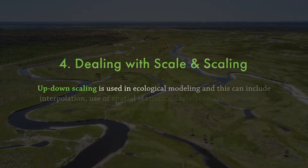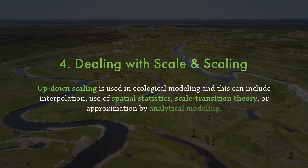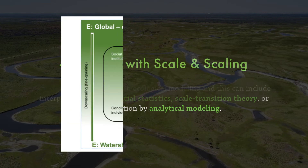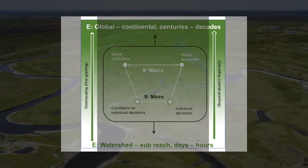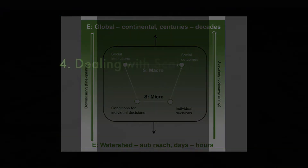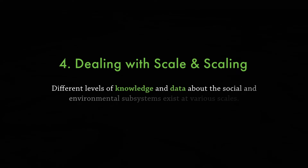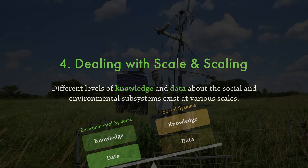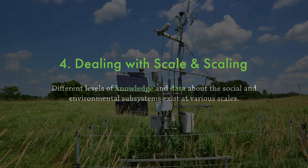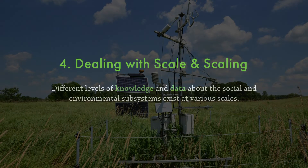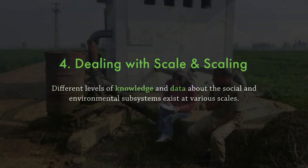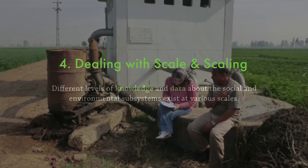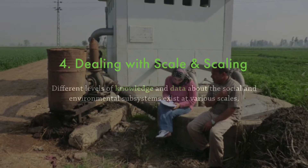Up-down scaling is used in ecological modeling and can include interpolation, use of spatial statistics, scale transition theory, or approximation by analytical modeling. However, such approaches are not widely used with social data and may not even be amenable. Additionally, different levels of knowledge and data about the social and environmental subsystems exist at various scales. Environmental data may have a long history of observation, often enabled by automatic sensors delivering high resolution data. Yet high resolution social data usually represents a single time interval such as a survey or a post on social media, since social panel data is expensive to collect and may be hindered by privacy issues.